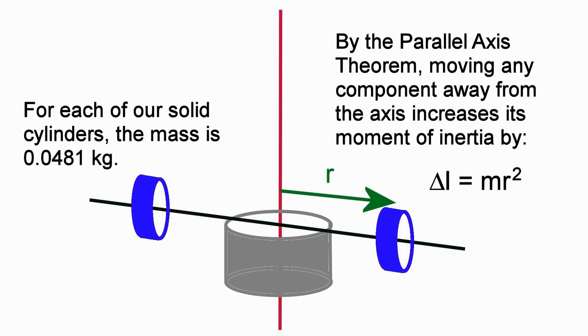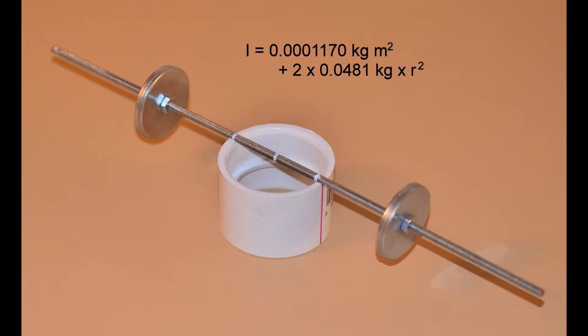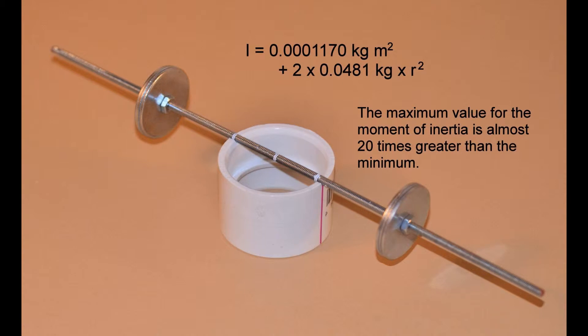In our case, the mass of the washers is going to remain constant. However, the distance from the center of rotation will change. Combining the constant terms with the effects of changing the position gives us an equation which should be a good predictor of the changes in moment of inertia. Since the distance from the axis to the washers can vary from about 5 millimeters to about 150 millimeters, we can expect the moment of inertia to change by nearly a factor of 20.